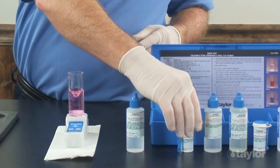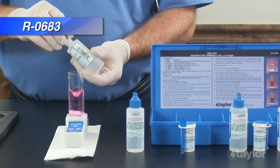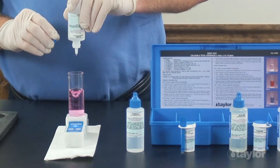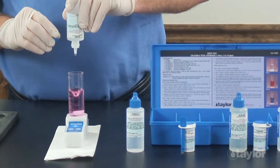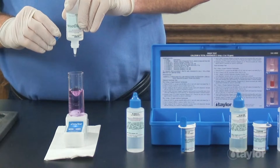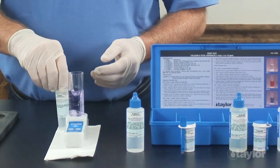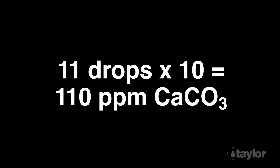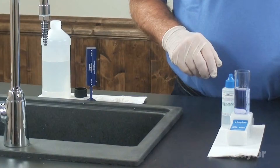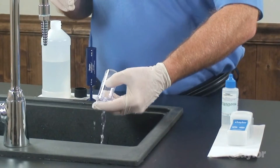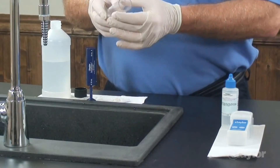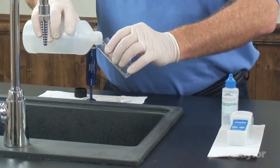Next, add hardness reagent drop wise, swirling and counting after each drop, until the color changes from red to blue. Multiply the drops of hardness reagent needed to reach the endpoint by 10 and record as parts per million calcium hardness as calcium carbonate. Discard the sample and rinse the sample tube with DI water or hardness-free water before performing the test for total hardness.